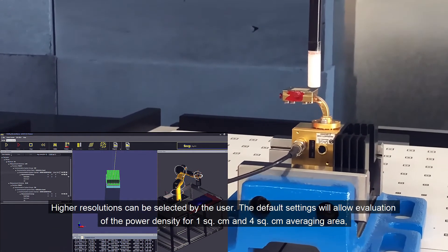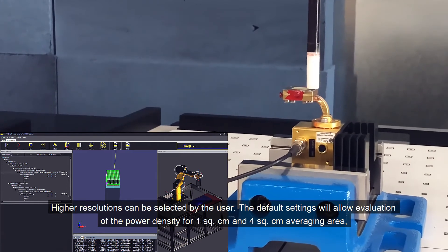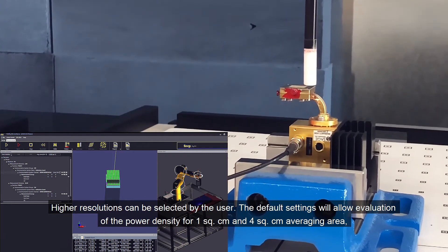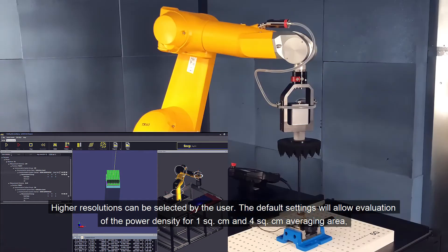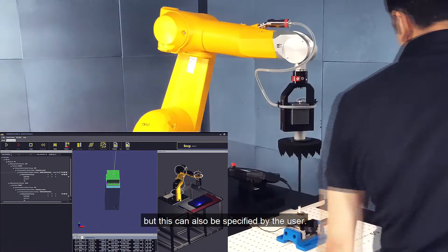Higher resolutions can be selected by the user. The default settings will allow evaluation of the power density for one square centimeter and four square centimeter averaging area, but this can also be specified by the user.